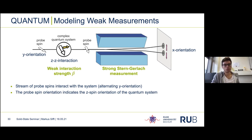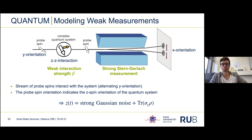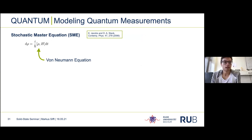Depending on the z-direction of our yellow spin, the probe spins are partially rotated, which slightly affects the probability of measuring up or down. After projecting the probe spin we gain partial information about the orientation of the yellow spin. Since this projective measurement is accompanied by the randomness of the projection, the detector output will contain a lot of Gaussian noise and the expectation value of the z-orientation of the yellow spin. One thing to note is that during the time of interaction the yellow spin and probe spin become entangled, leading to a small back action on the yellow spin rotating it towards the measured state.